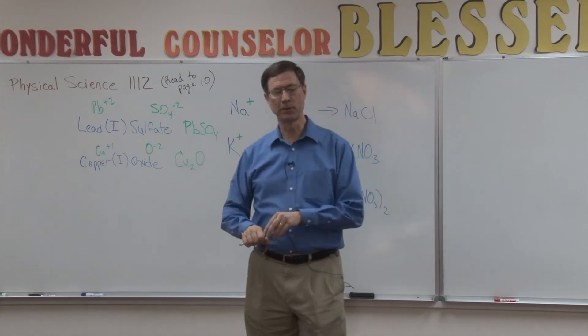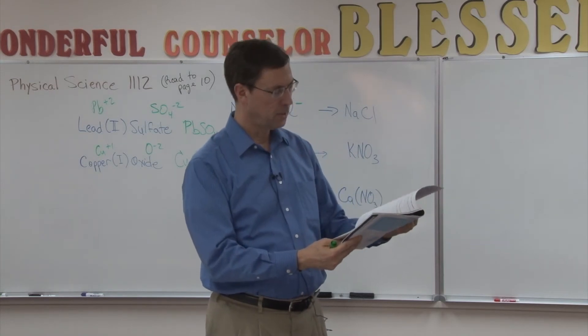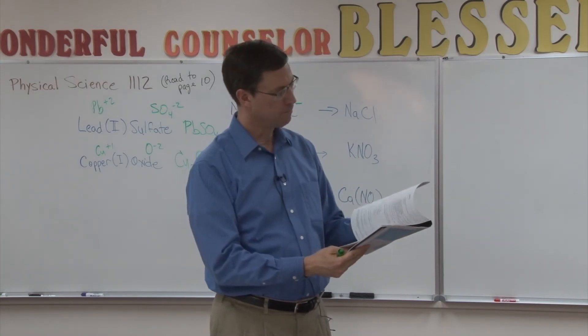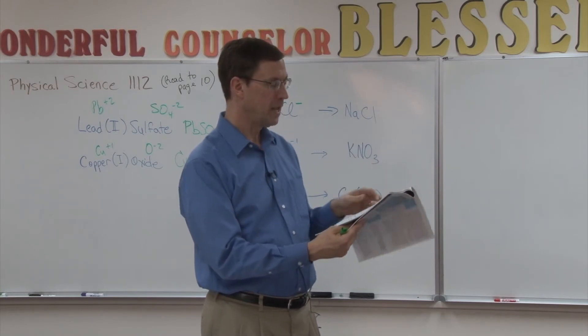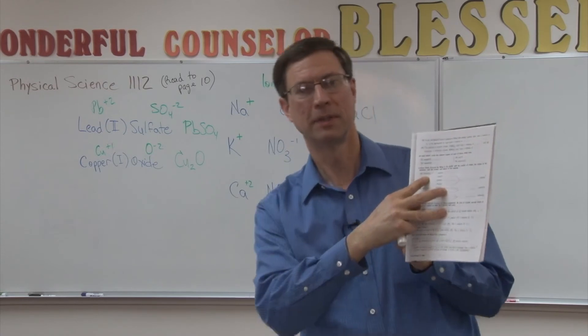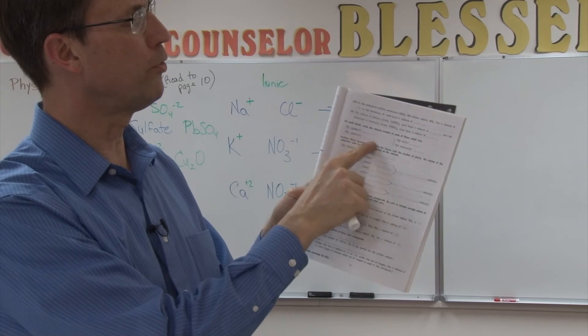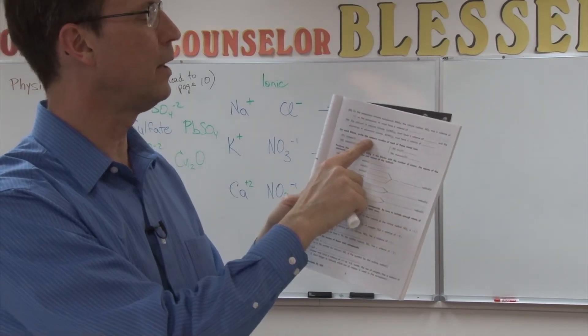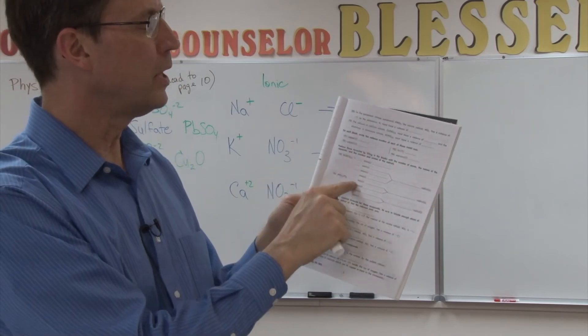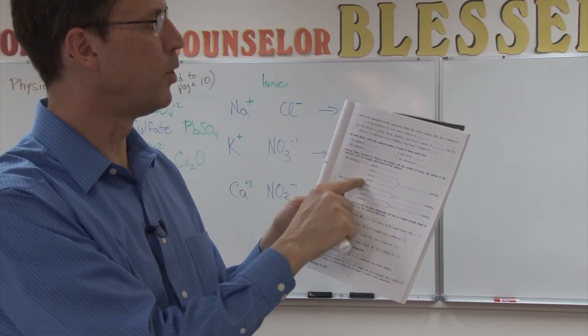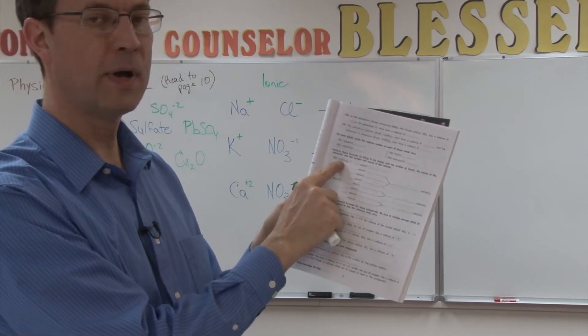You're going to work through several problems on page E and page F. And here on page F, you'll notice we have copper one, cobalt three. And all you have to do is figure out what the valence number is. So it's a positive number. That should be easy. Down here, you're going to list a number. How many total atoms of aluminum are there? How many total atoms of hydrogen? Now be careful.